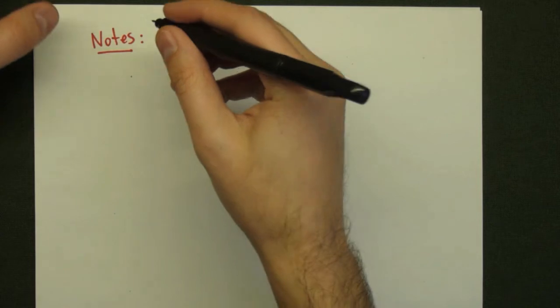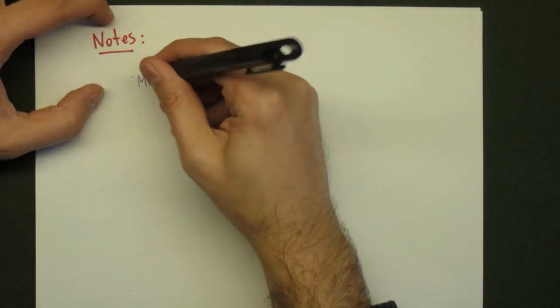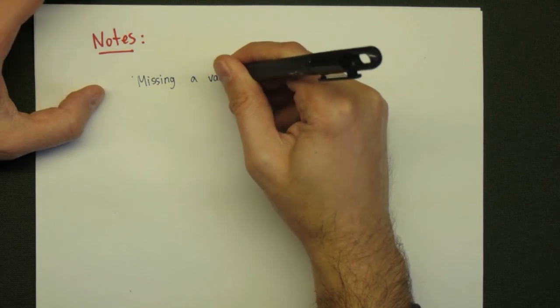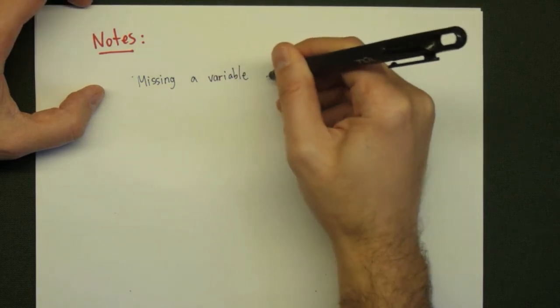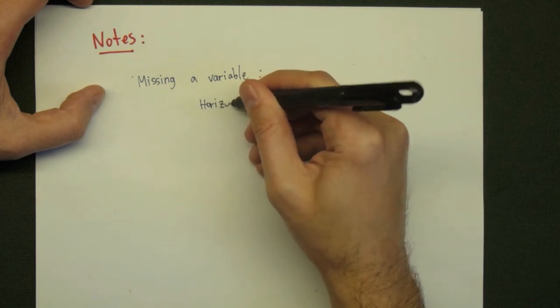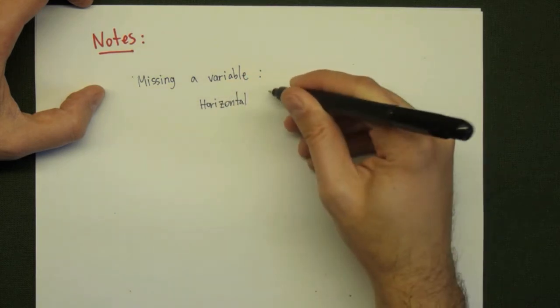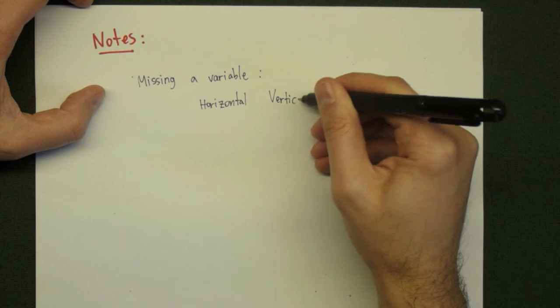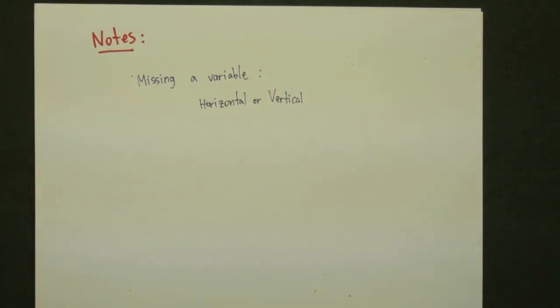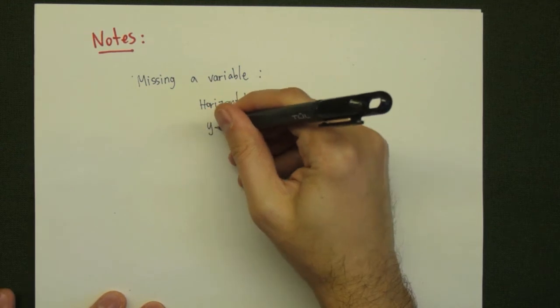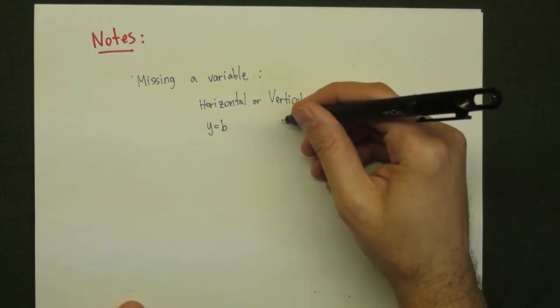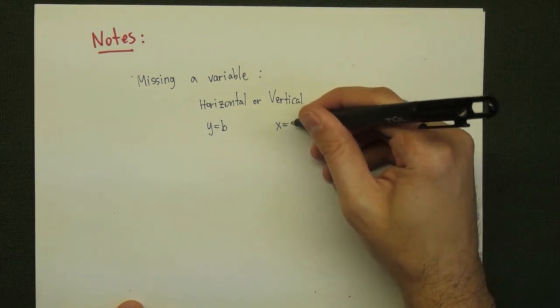There are a few notes to go along with graphing of lines. In the case when one of your lines, or the equation of your line, is missing a variable, the line will be a horizontal or a vertical line, depending on which variable is missing. If it's in the form y is equal to a number b, then we have a horizontal line. In the form x is equal to a, we have a vertical line.